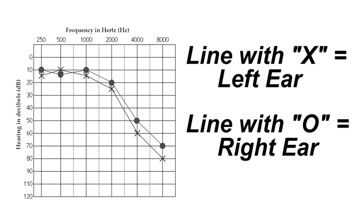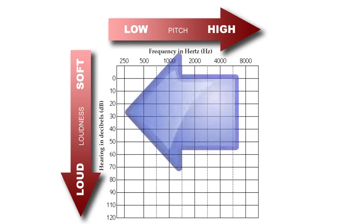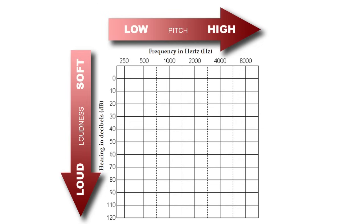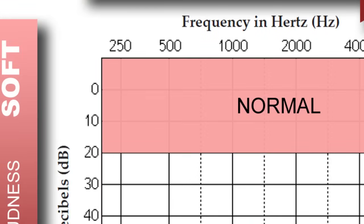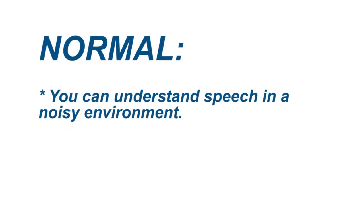Let's take a moment to focus on the sound loudness which runs from top to bottom and is measured in decibels. If your hearing is normal, you should see an X or a circle that falls into the 0 to 20 decibel range for each frequency. That means you can understand speech in a noisy environment and no amplification is needed.